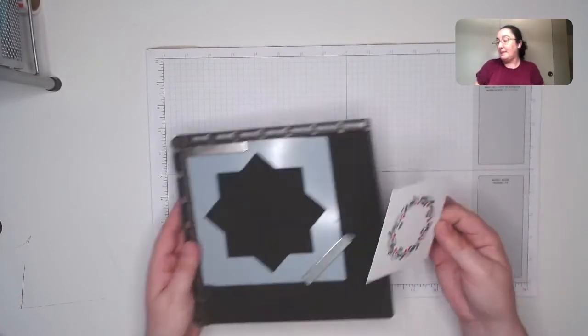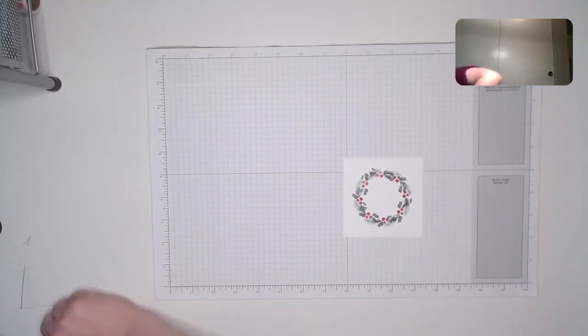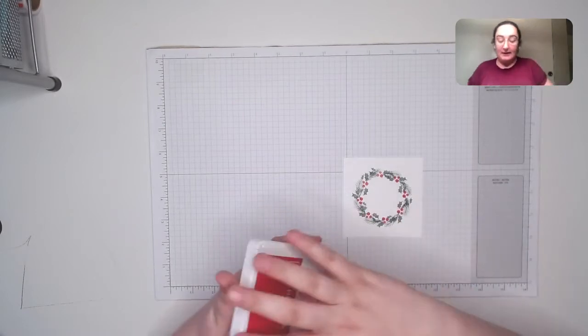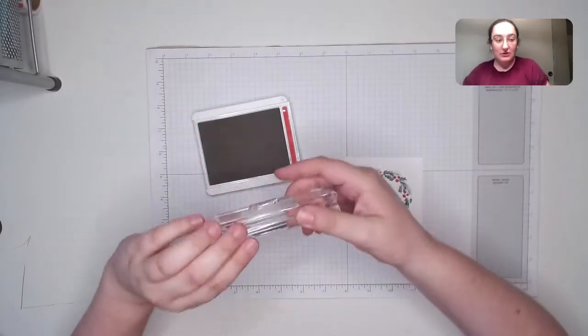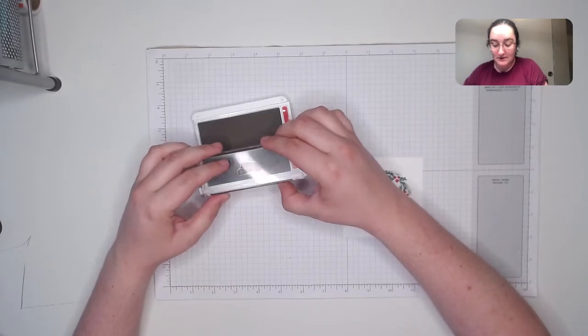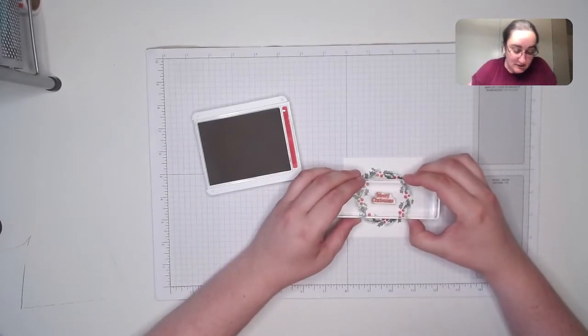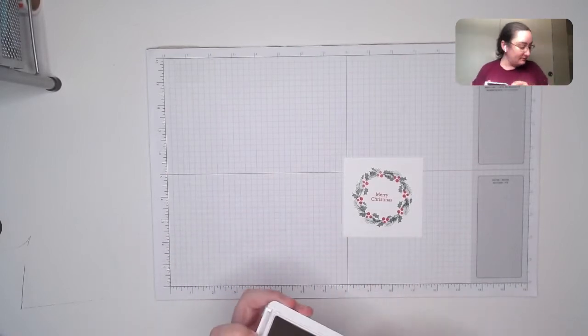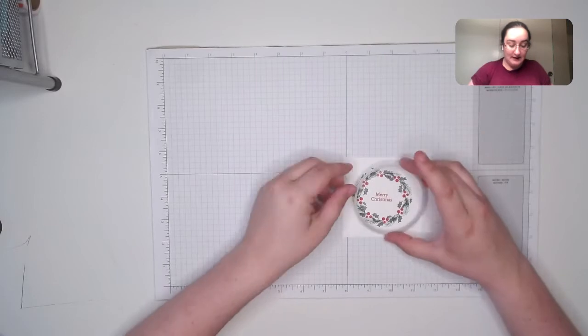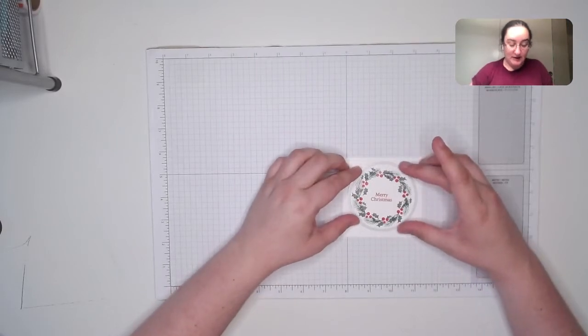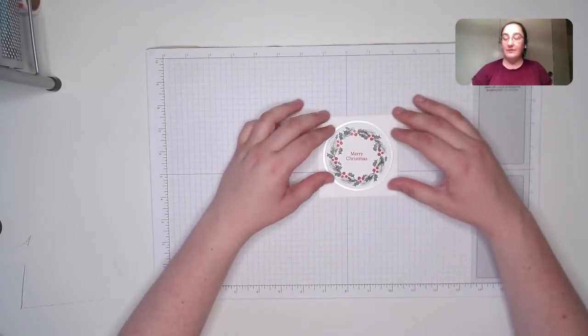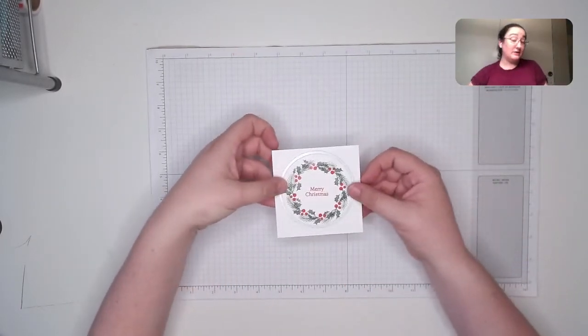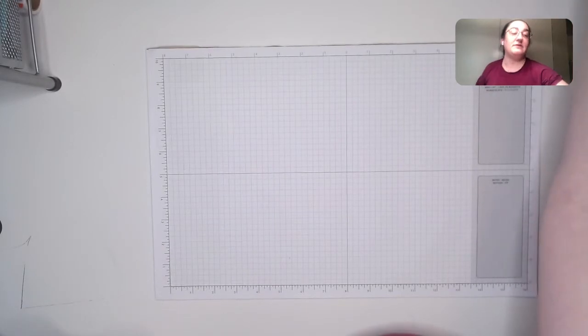Alright, so now this is done. Before I drop it again, I've dropped my Stamparatus about 12 times already today. And then I'm going to stamp this Merry Christmas greeting just smack in the middle there. And then I'm going to cut this out with that die that I had there. So you can see now my whole wreath fits perfectly in that die. And I can do whatever I want with that die cut.